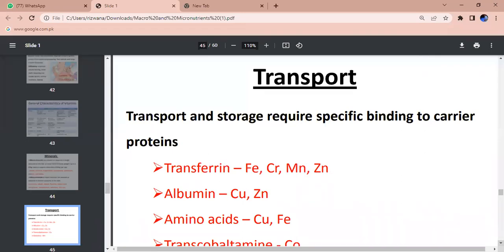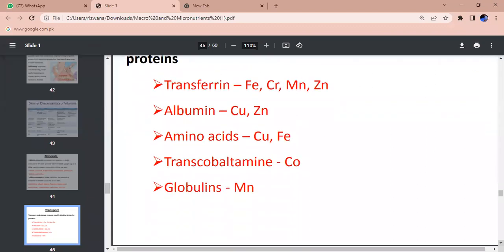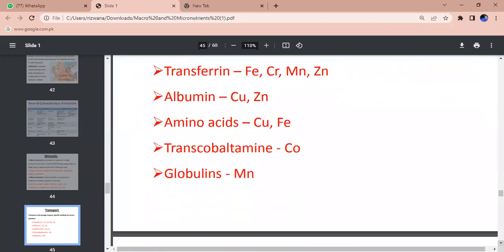For transferrin, we use it for iron, chromium, manganese, zinc - transferrin as a carrier for transportation. For zinc and copper, it is called albumin. For copper and iron - amino acids. For transcobalamin - copper, cobalt. Ceruloplasmin and globulin for transportation. Transmanganin is responsible for manganese.